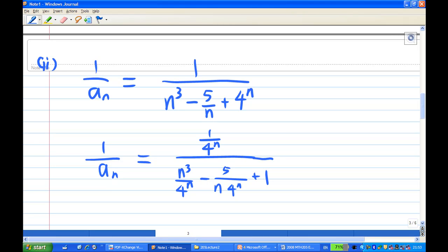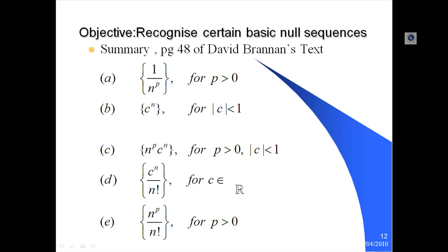Now in this case, we need to use some results about basic null sequences. From page 48 of David Brennan's text, 1/nᵖ is a basic null sequence. And I'm going to make use of results 0.3 and 0.8: 1/nᵖ and nᵖ · cⁿ is a basic null sequence for |c| < 1 and p > 1.